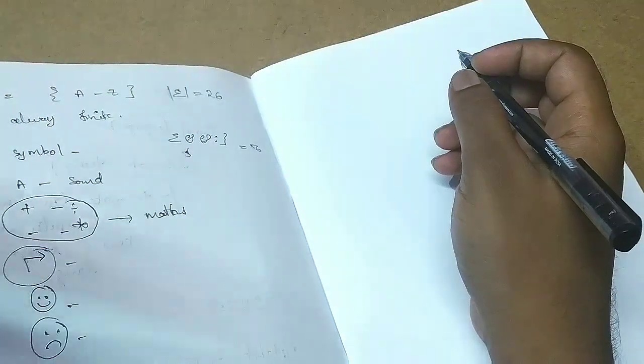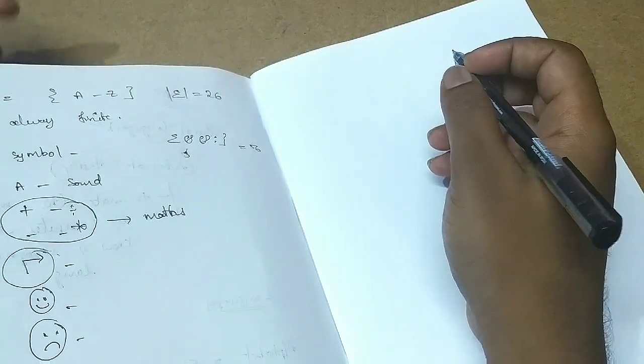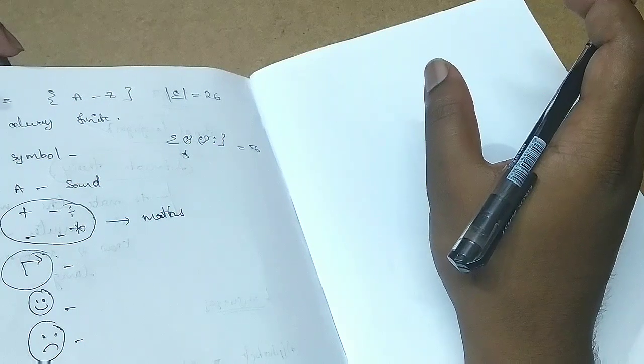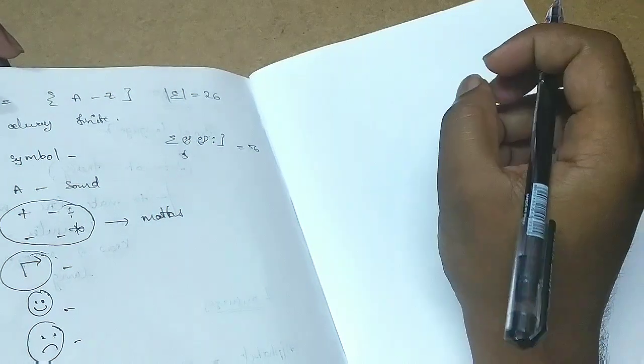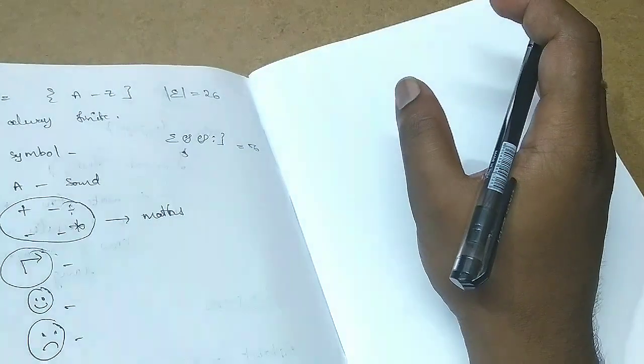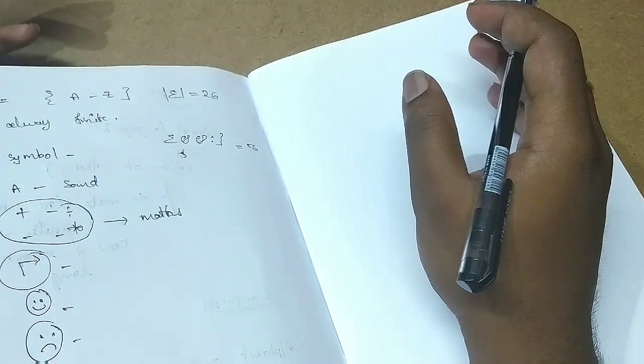Formal languages are different from natural speaking languages. These are a little bit easier and are designed for our convenience.